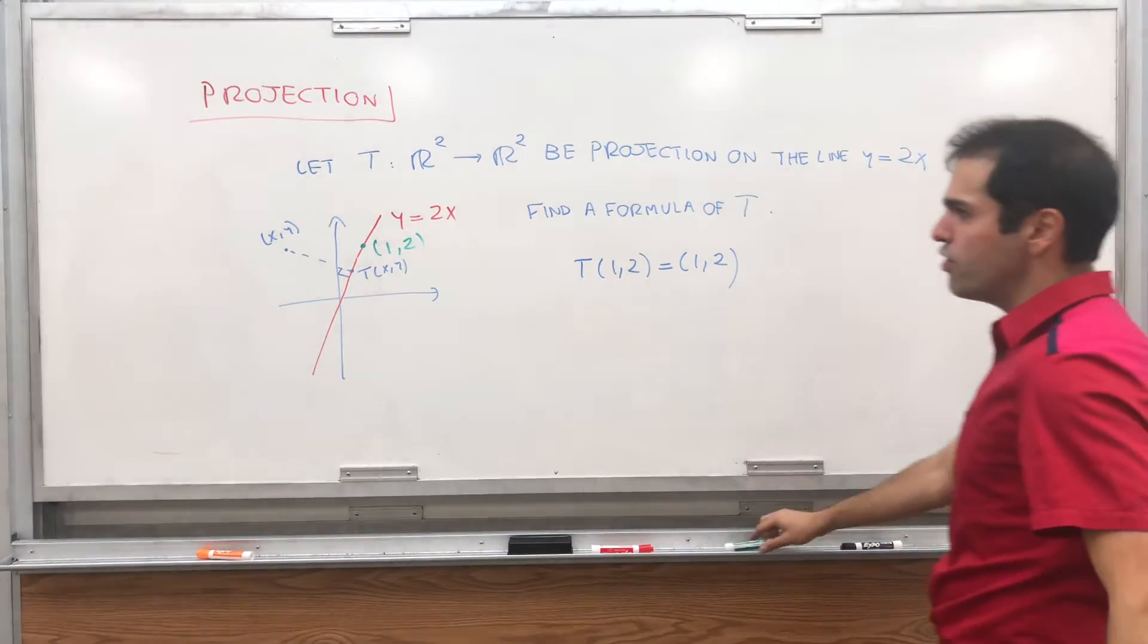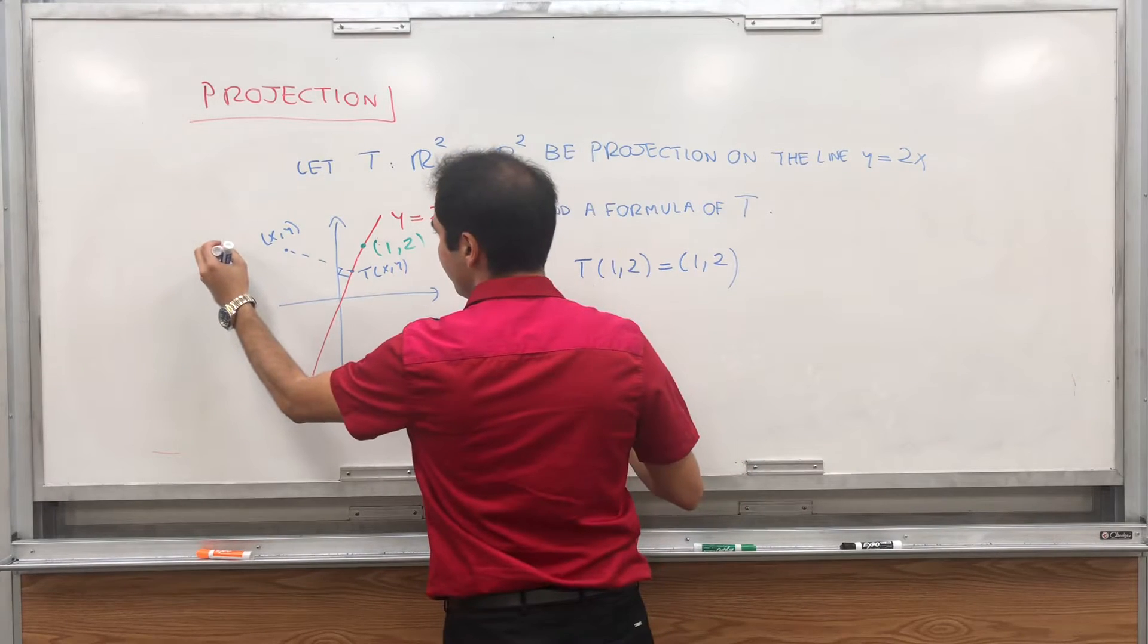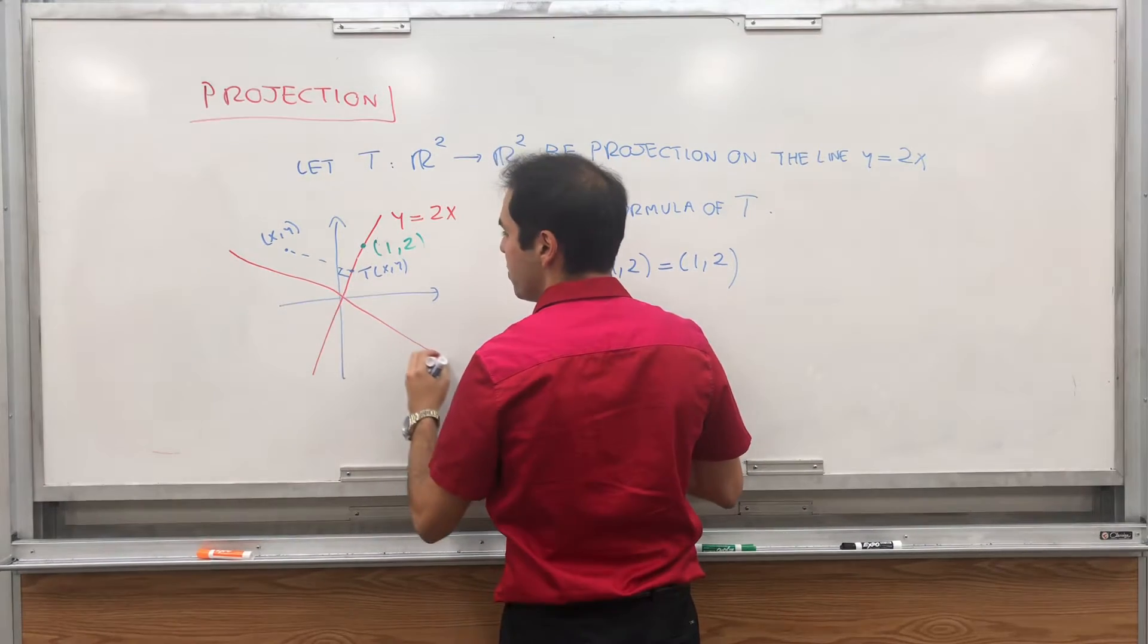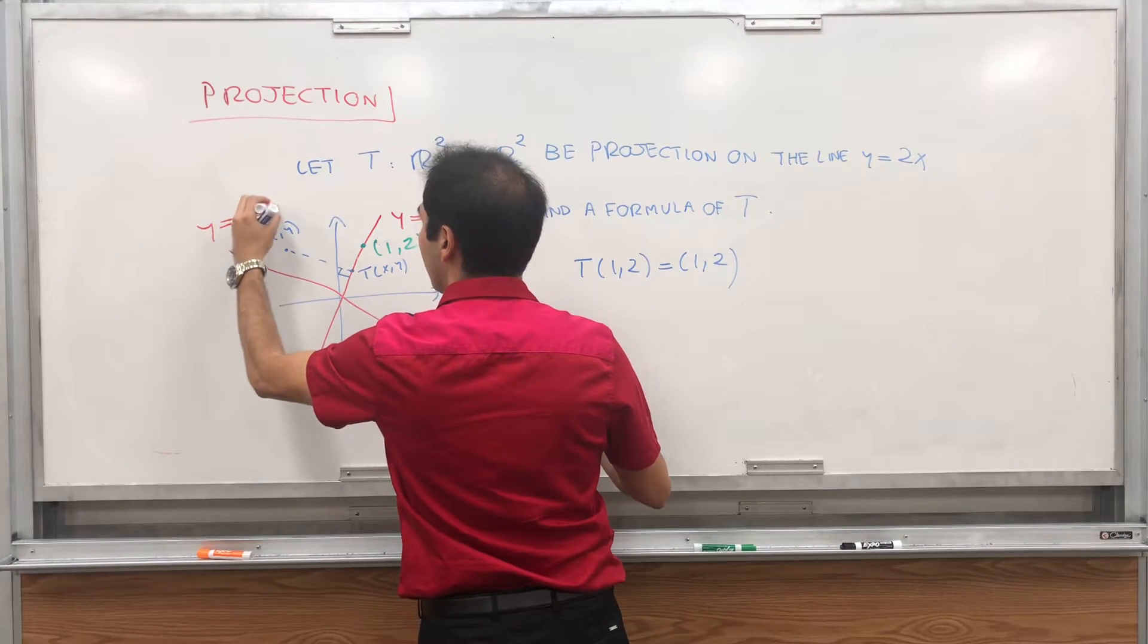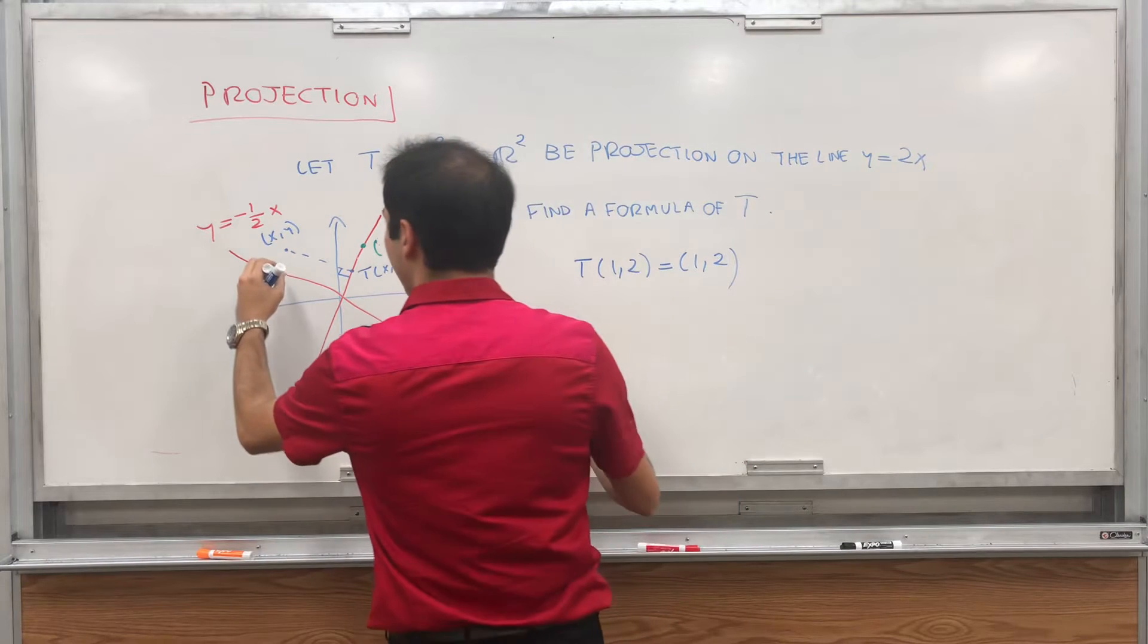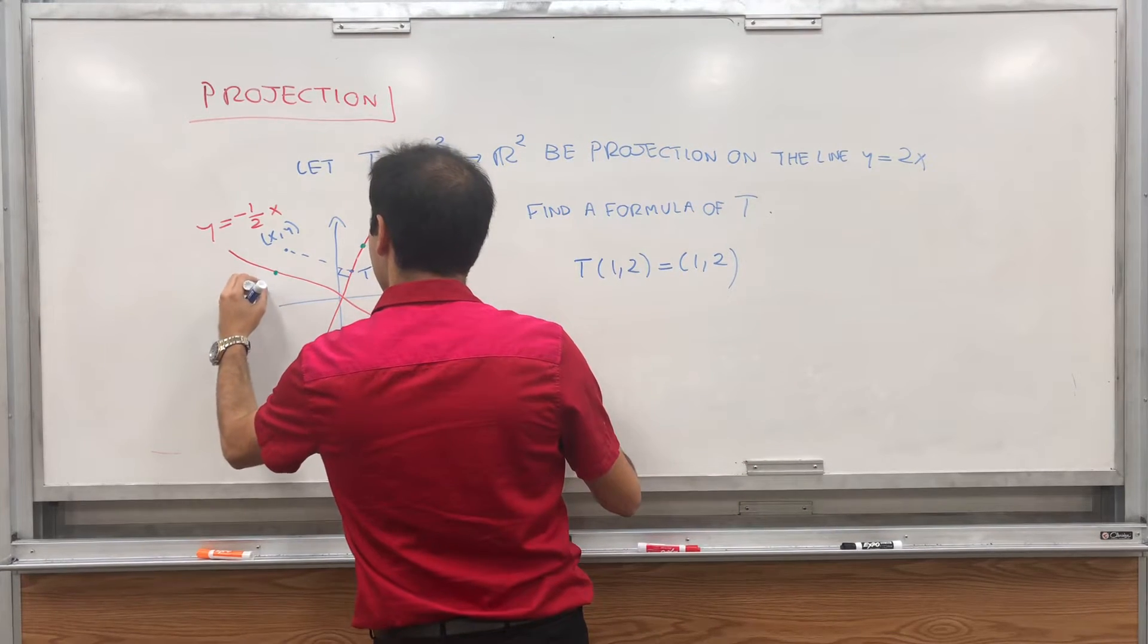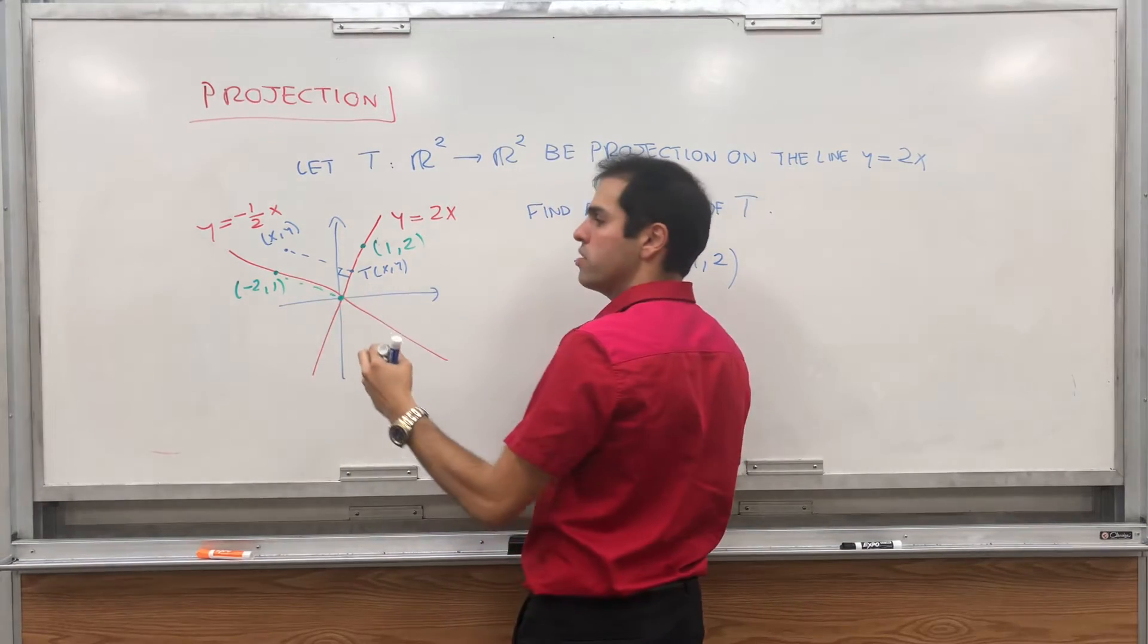And similarly, if you take a point that's perpendicular, in other words, if you take a point on this perpendicular line y equals minus 1 half x, and you project it, let's say the point minus 2 comma 1, and you project it,